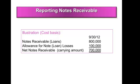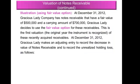How do we present notes receivable on the balance sheet? At September 30, 2012, notes receivable on the asset side is $800,000. Below that, you record allowance for notes losses of $100,000, meaning you estimate you will not collect $100,000 of the $800,000. Therefore, the net realizable value of your notes receivable is $700,000, which is the carrying amount recorded in your books at September 30, 2012.